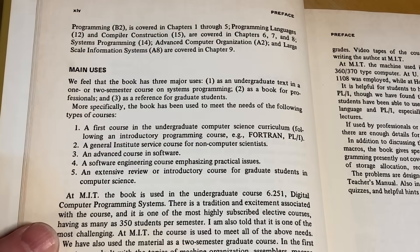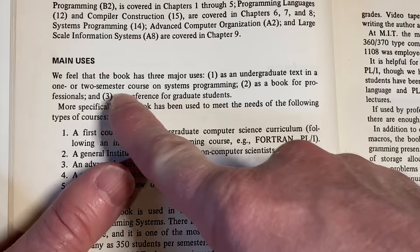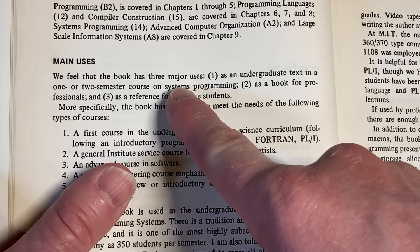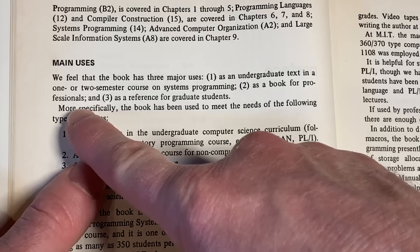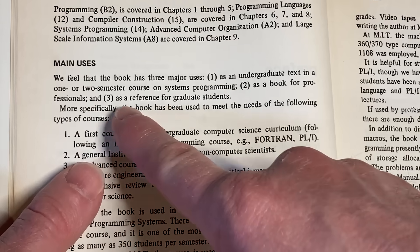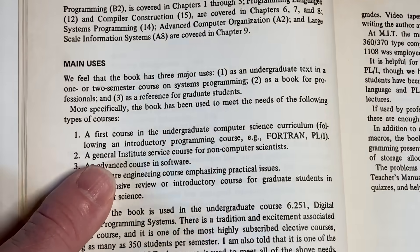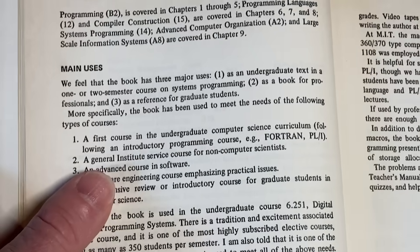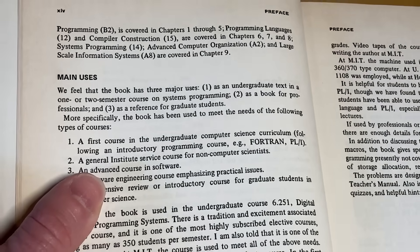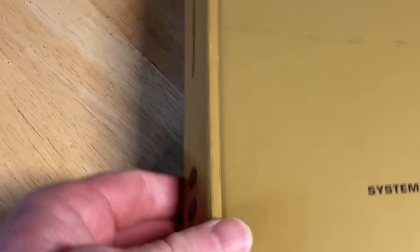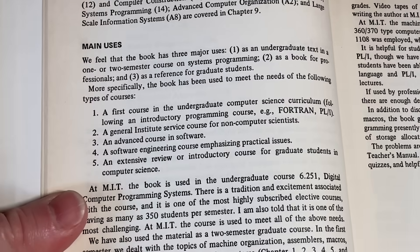Here it talks about the main uses — it has three major uses: as an undergraduate text for a one or two semester course on systems programming; two, as a book for professionals; and three, as a reference for graduate students. So this is a book you can buy and use as a reference, keep it in your library. As a collector of math and science books, I do have some computer science books, and this is one of the older ones that I have.